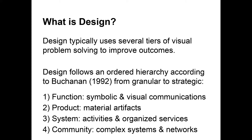Design follows a hierarchy that Buchanan describes as moving from symbolic systems and functions in visual communication, to the material artifacts of products, up to a level of organized services and activities in systems, and beyond that to complex networks of networks — or systems of systems — that form communities. Design can function between these levels. Graphic design functions more in the symbolic and visual communications space, whereas industrial design functions more at the product level, and architects work at the system and product level. Ideally, any designer can function at all four levels.